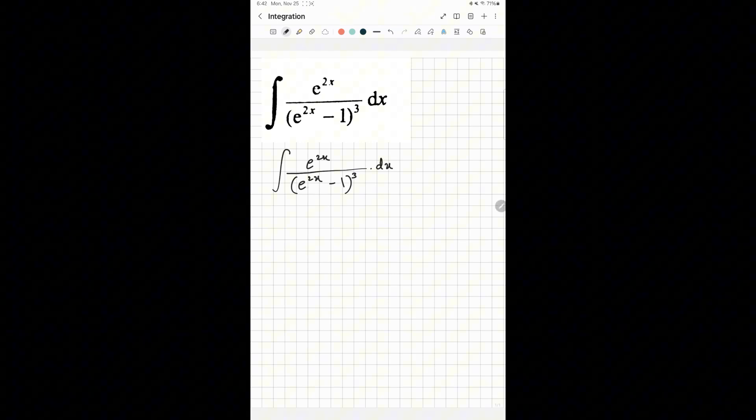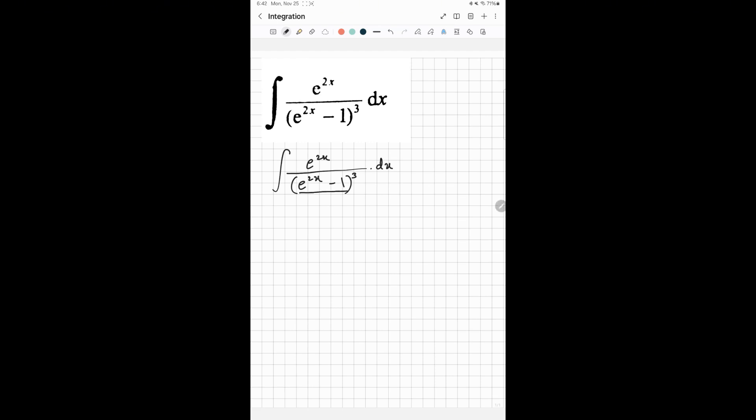So we can take this as a substitution. You can write u equals e^(2x) - 1. And then you would have to differentiate this because we have dx over here, so we would have to make it du.